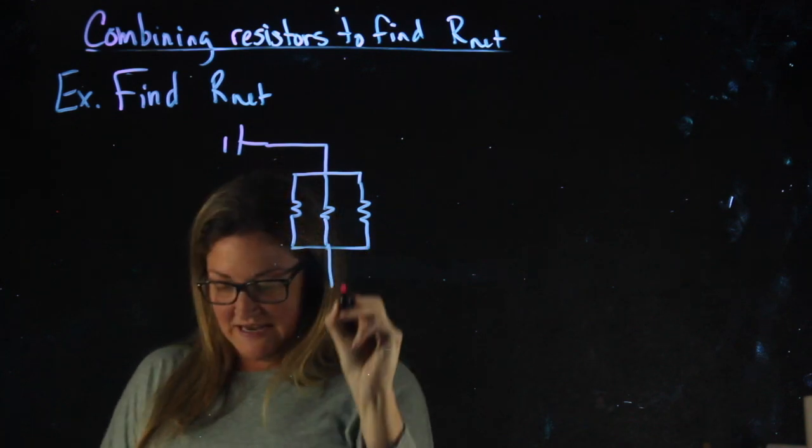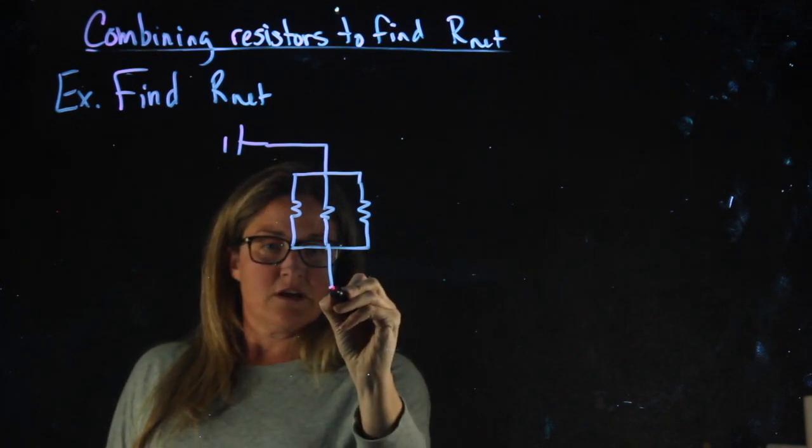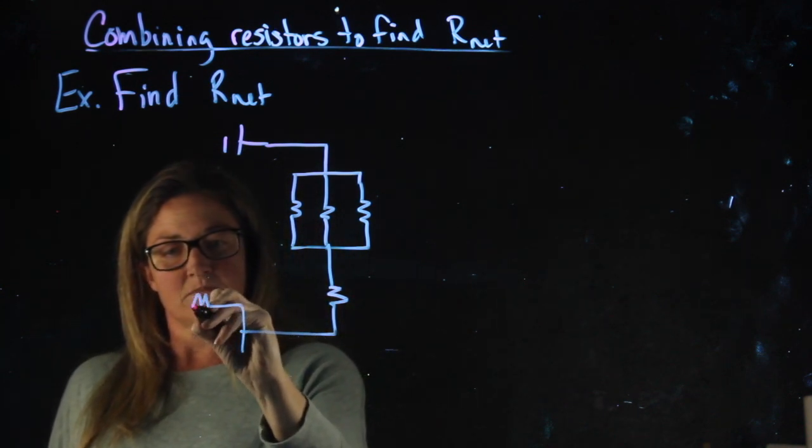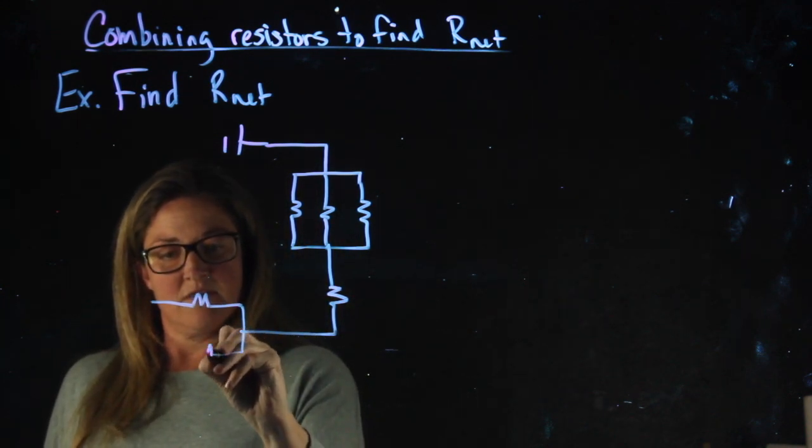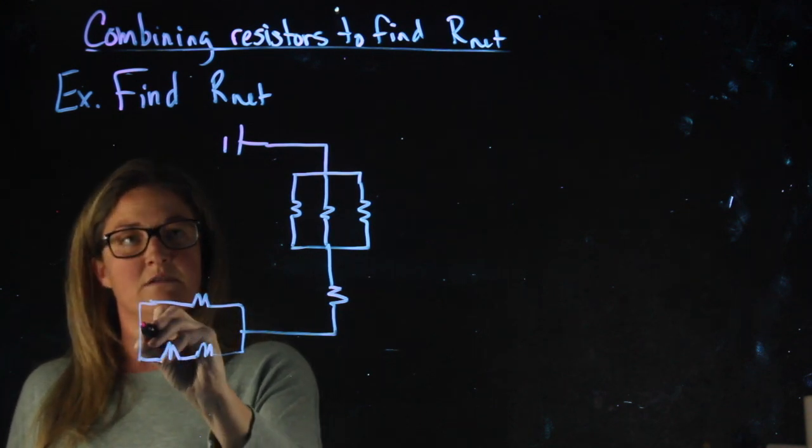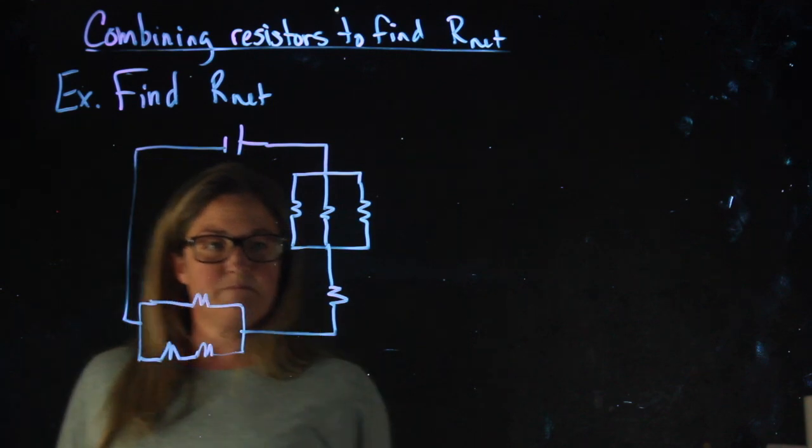Then the current comes back together. It's going to go through this resistor and then branch again. This branch has two resistors. The other one has one. Join back up and finish up.